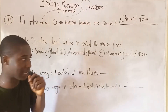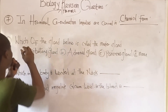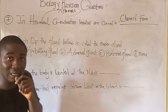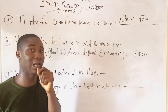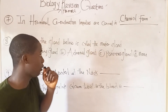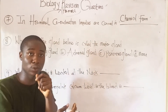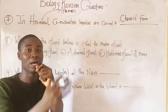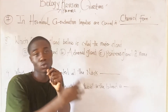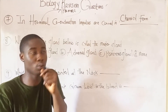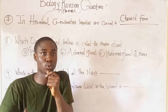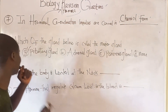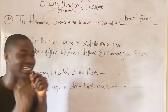Question eight: which of the glands below is called the master gland? The master gland is called the pituitary gland. We have the anterior pituitary gland and the posterior pituitary gland, which produce the anterior and posterior pituitary hormones respectively.